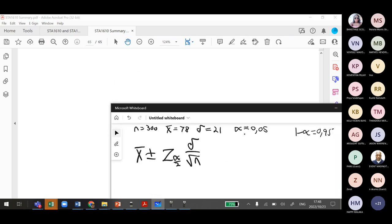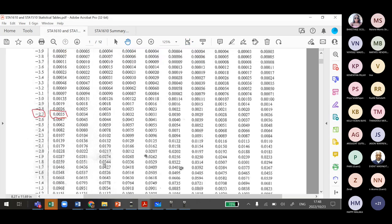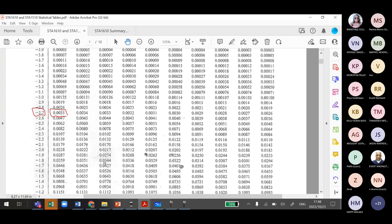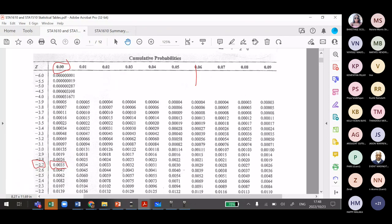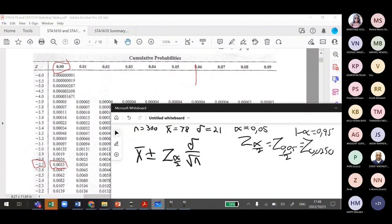When we look at this, our critical value for Z of alpha over 2, which will be Z of 0.05 divided by 2, which is the same as Z of 0.025. It means this probability we go and find on the table. Inside this table, we look for 0.025 and we look for the Z value, which is 1.96.